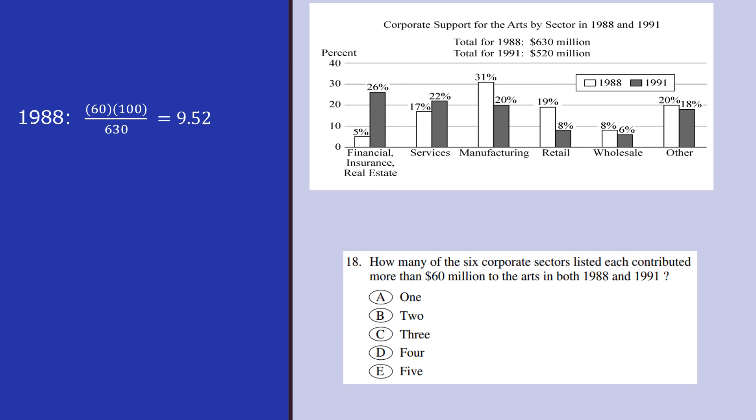We have the total is 60 times 100 divided by 952. And for 1991, the contribution is 60 out of 100 divided by 520 because the total for 1991 is 520. So since we want to get more than 60 million, we have to look for values greater than 9.52 for 1988 and greater than 11.54 for 1991.